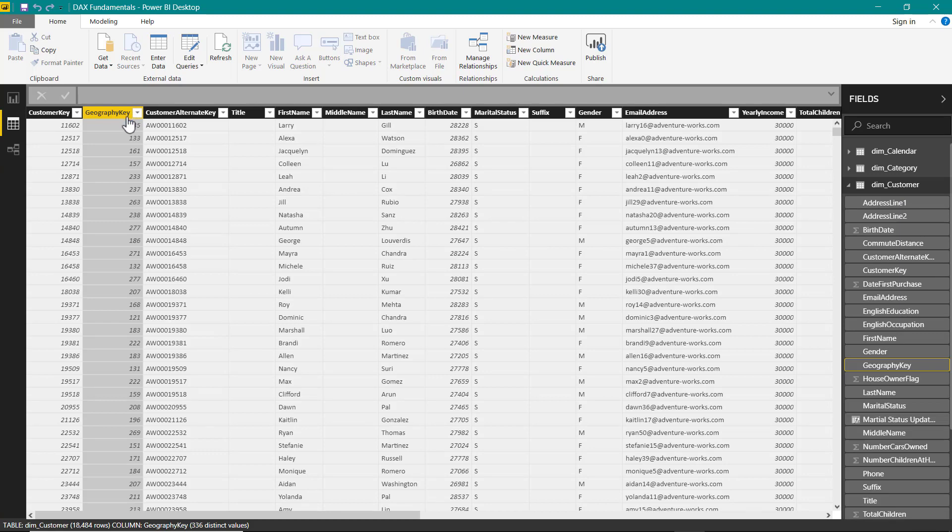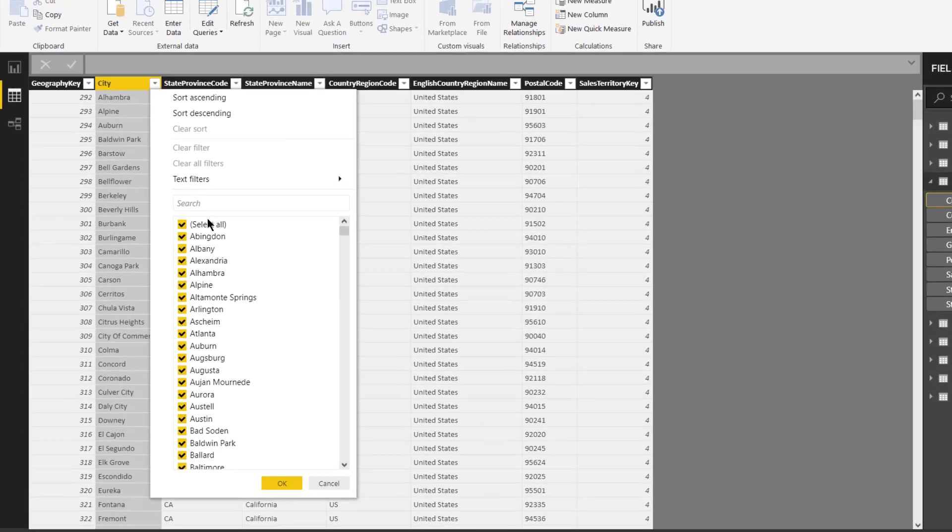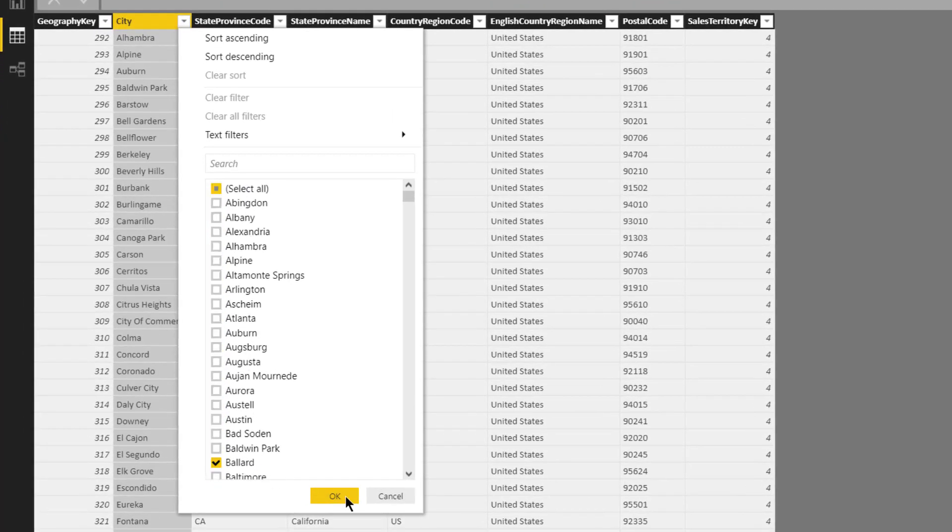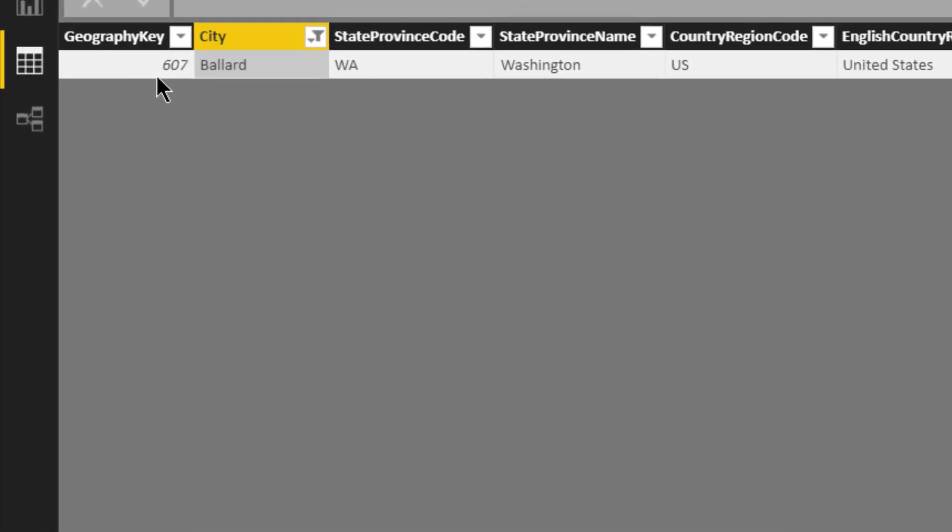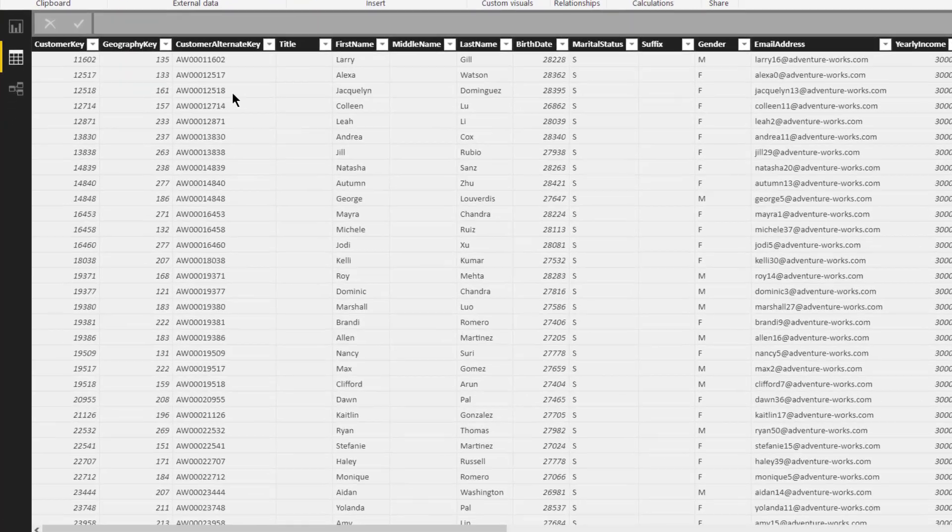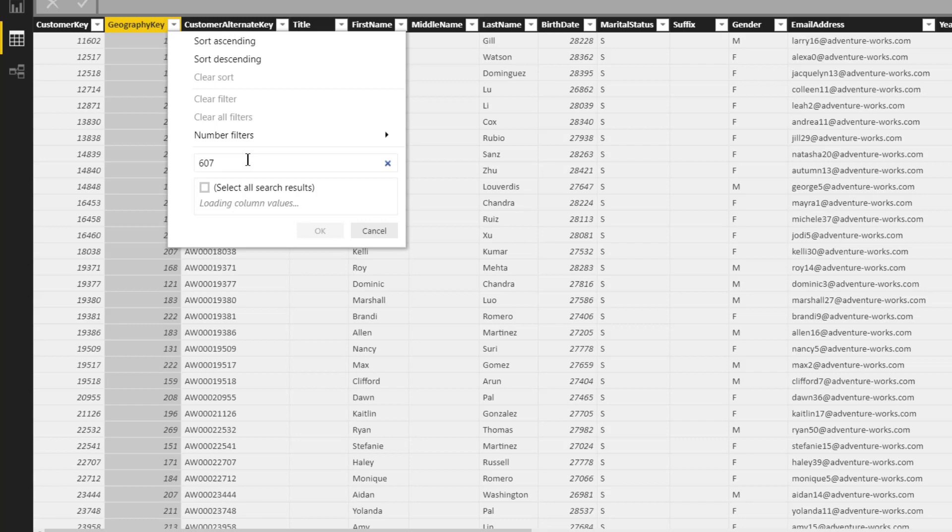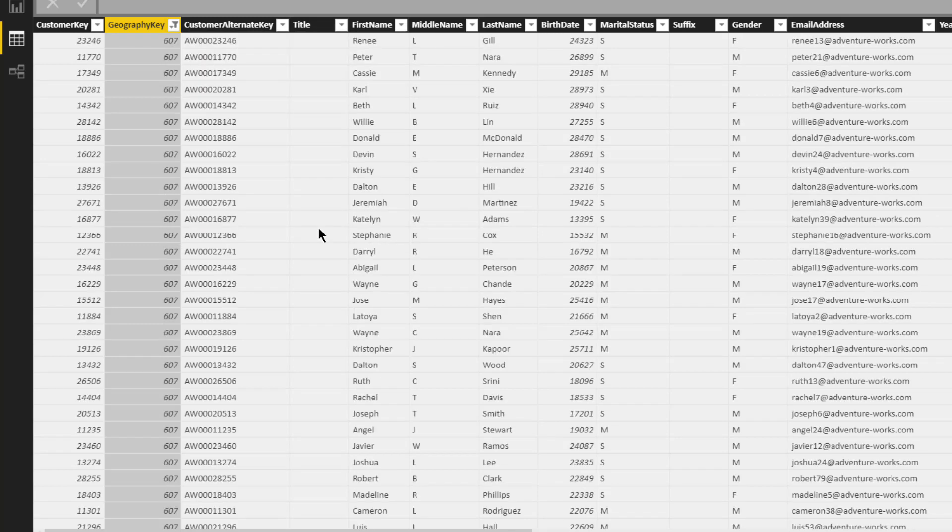Our city was Ballarat. Let us select Ballarat here. And here you can see that geography key is 607. This key will then flow down to customer table and it will filter out only those customers which are tagged with this customer key. So, let's click OK.